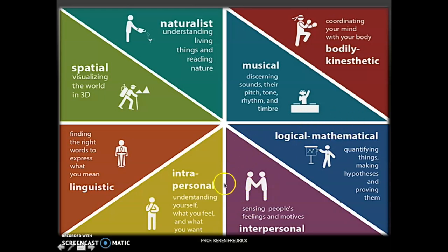Interpersonal intelligence is your ability to relate to others and understand how another person feels. People high on this are typically counselors, psychologists, or doctors. Intrapersonal intelligence is your ability to understand yourself — your strengths and weaknesses. You could be a philosopher or psychologist. Gardner's theory was criticized because many felt these are just mere skills and not necessarily intelligence, which was a major criticism of his multiple intelligence theory.